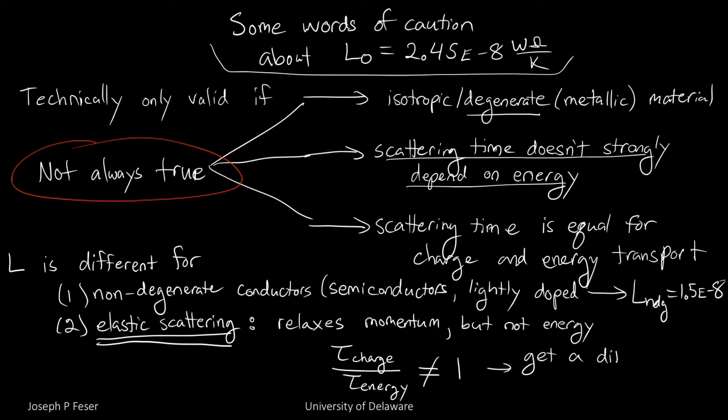And so you can get a ratio, like the scattering times for those two things aren't the same. It takes longer for energy to change than it does for direction. And so you'll get a different value of the Lorenz number if you try creating the ratio in that way.